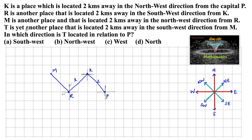T is another place located two kilometers away in the southwest direction from M. Taking directions from M, southwest is between south and west. So we mark two kilometers in the southwest direction from M, and that place is T.